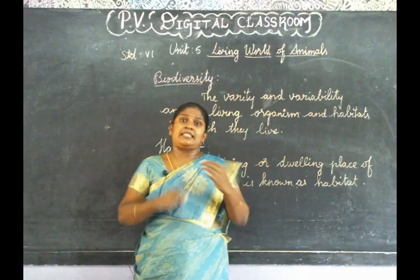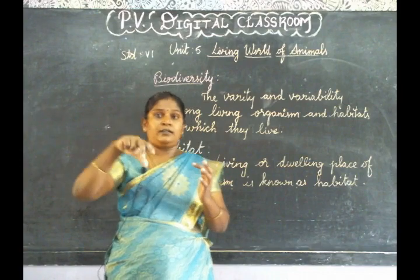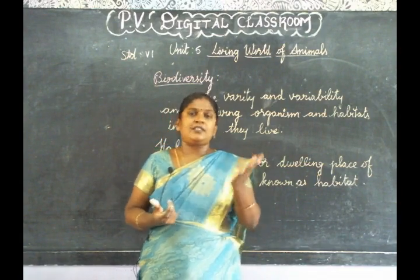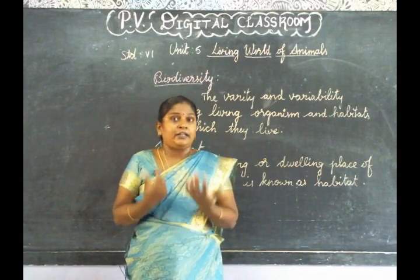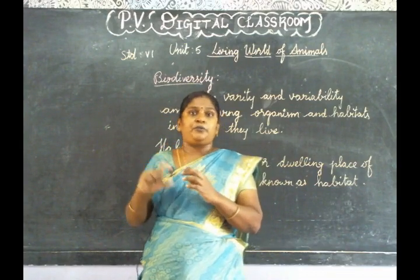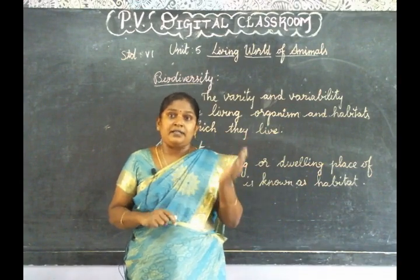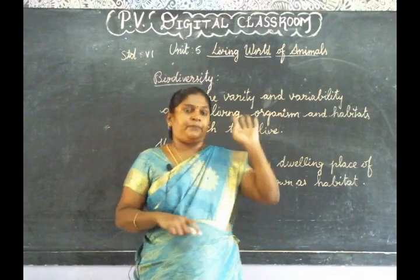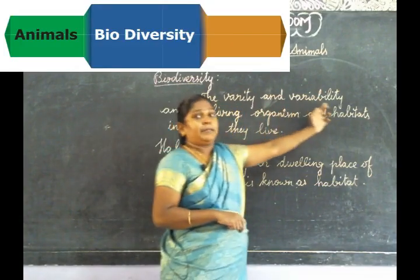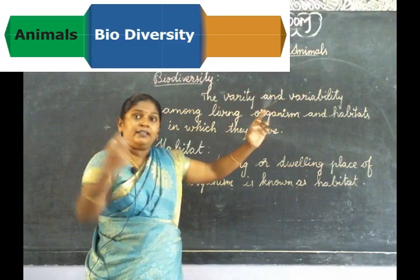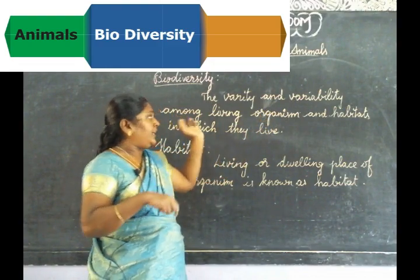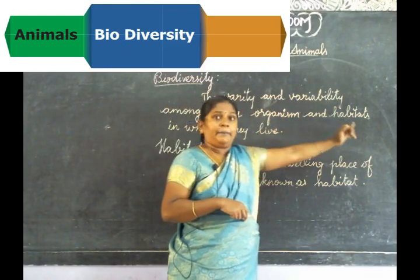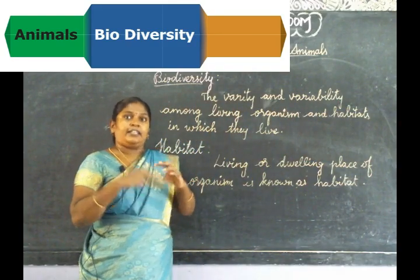There are different landscapes: pond, river, ocean, desert, and mountain. These are different landscapes. The variety of different kinds of animals and plants living together in one landscape is called biodiversity.